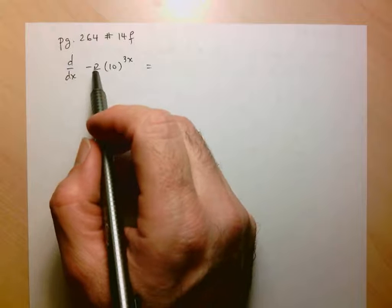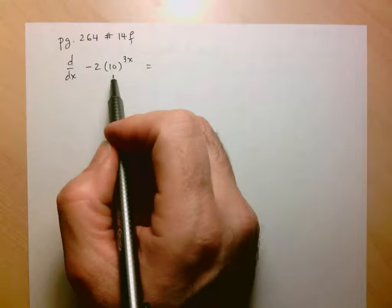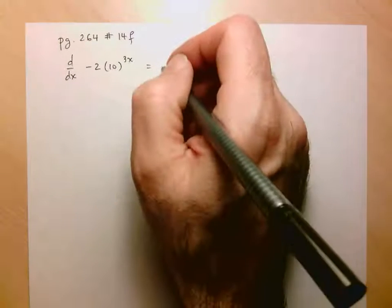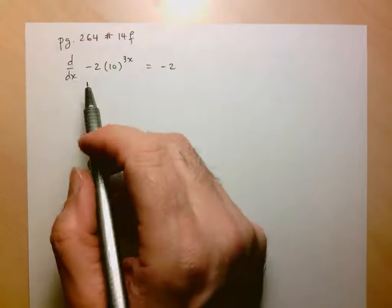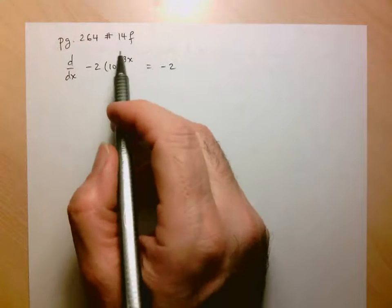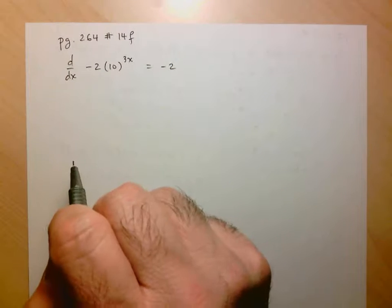I've got negative 2, which is just a constant multiplying this exponential function. So let's just take that out, so it's negative 2 times the derivative of this function here.